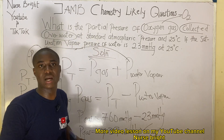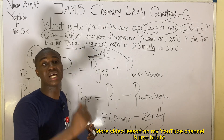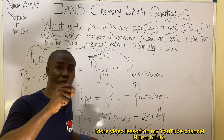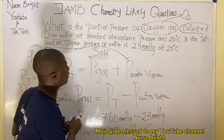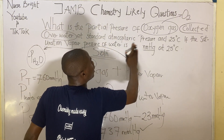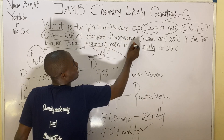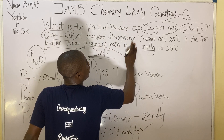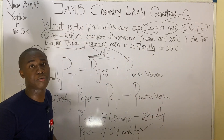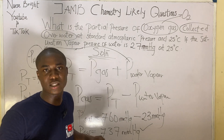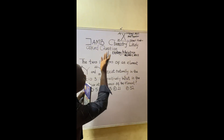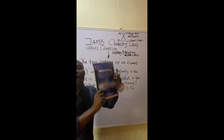Now I want to give you a practice question. Standard atmospheric pressure is still 760 mmHg, but let's change the vapor pressure of water to 27 mmHg. Solve for the partial pressure of the gas and post your answer in the comment section. Remember, you do not use temperature to solve.